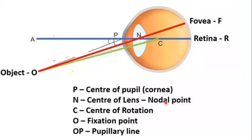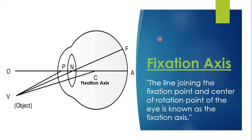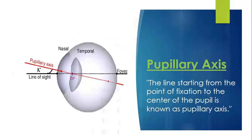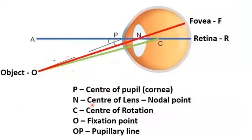Over here, you can see that the line passing from the center is the optical axis. The line from the object to the fovea is the real axis. And the line from the object to the center of the eye is the fixation axis. The key points: P is the center of the pupil, N is the center of the lens or nodal point, and the center of rotation is the center of the eye. The fixation point is O or the object. OP is the pupillary line.